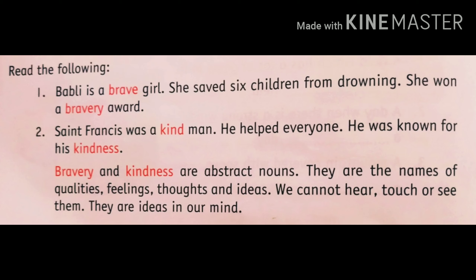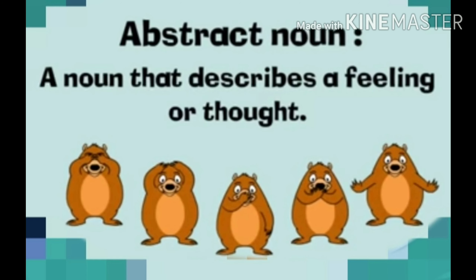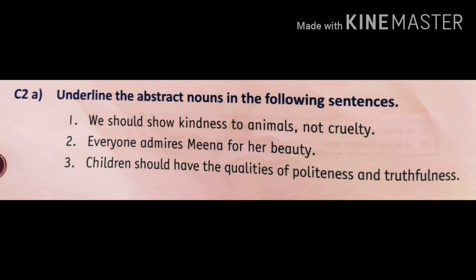We cannot hear, touch or see these words, so these are examples of abstract noun. Abstract noun describes a feeling or thought. As you see in this picture, we cannot see this word, cannot hear it, cannot smell it, cannot taste it and cannot touch it. So these are called abstract noun.